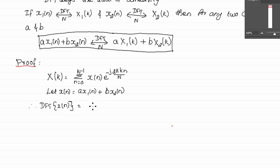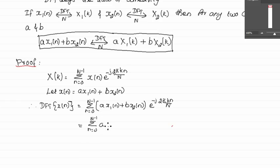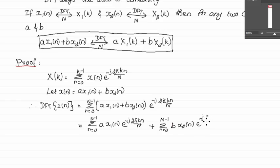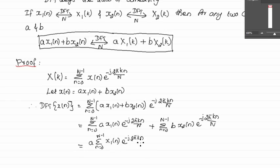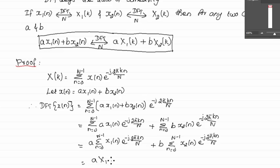So in place of x(n) we substitute a·x1(n) + b·x2(n), and separating the two terms: a · summation from n=0 to N-1 of x1(n)·e^(−j2πkn/N) plus b · summation from n=0 to N-1 of x2(n)·e^(−j2πkn/N). We can take the constants outside since they are independent of n. Taking the summation, this is equal to the DFT of the sequence x1(n).